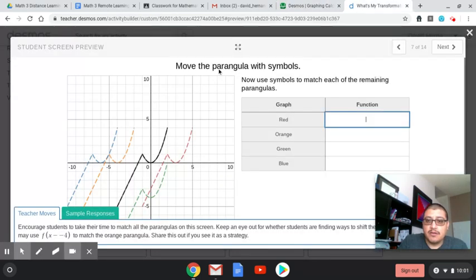This is called a made-up shape perangula. Looks like a parabola, but notice it starts at zero. It has a local minimum at 0, 0. I wouldn't call that a vertex, but it looks like a local minimum.